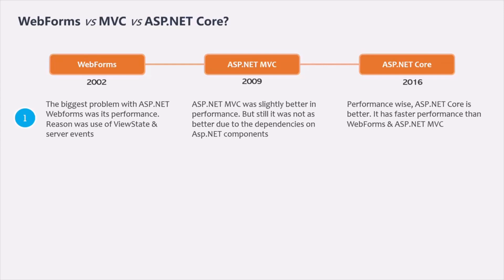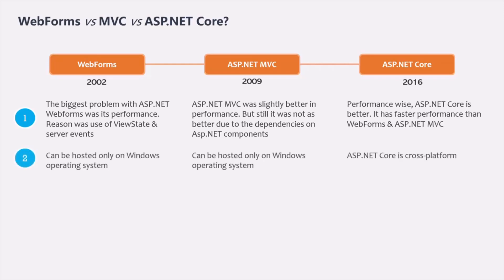Now, what about ASP.NET Core? High performance, cross-platform, and cloud-enabled — these are some of the features that were kept in mind while developing ASP.NET Core. ASP.NET Core's first version was released in 2016 and the latest version is 6.0. ASP.NET Webforms and ASP.NET MVC only support Windows for hosting, making it quite difficult to host them on servers with an operating system other than Windows, especially Linux. But ASP.NET Core was designed as cross-platform from the beginning.